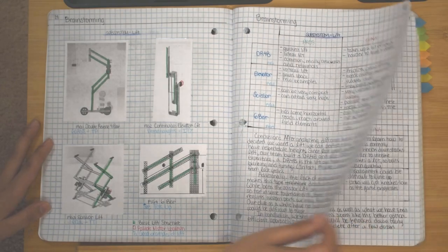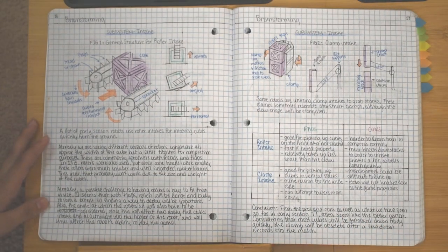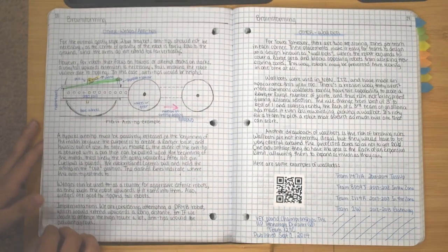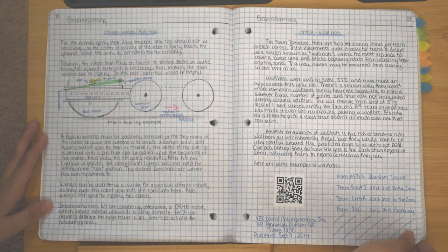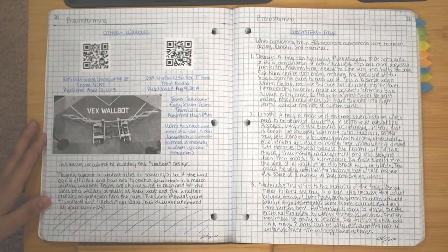Then, we included a brainstorming section where we compiled information and references for various subsections that we may need to use and weighed their pros and cons in these charts.